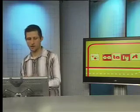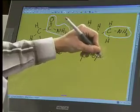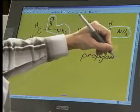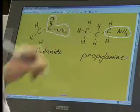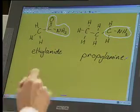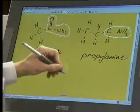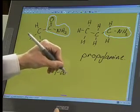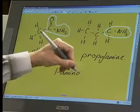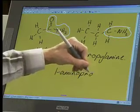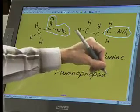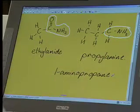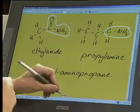So propylamine—that's the most common way of naming this. But what you can also do is you can say that on the first carbon, it is 1-aminopropane. So it's propane with the first carbon with an amino on it.